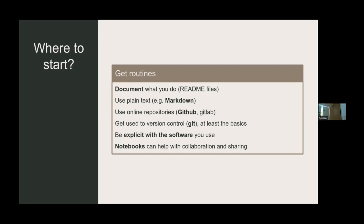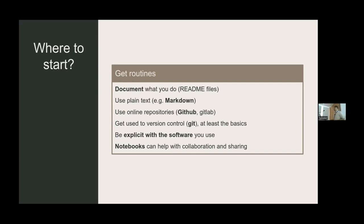Use plain text. Collaborative tools like Google Docs are useful, but for documentation it's better to use plain text you can always read in the future. Markdown is a great format — readable as plain text but also renderable as HTML or PDF. Use online repositories like GitHub and version control like Git. Git can be complicated, but learn the basics: add, commit, push. That's all you need to start. Be explicit about the software you use, and use notebooks for collaboration and sharing results.